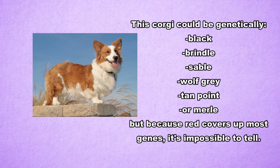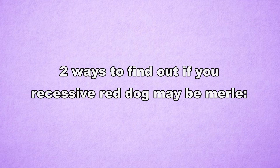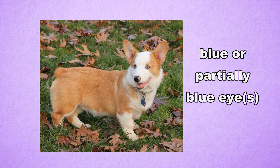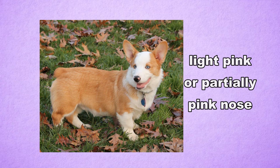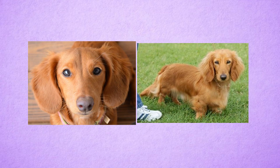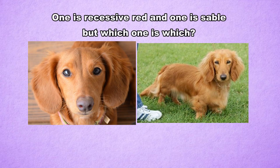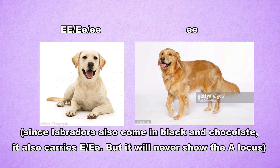A recessive red could even be merle while appearing solid red. Two ways to tell if your recessive red dog has merle is to see if the dog has blue or partially blue eyes, or it has a pink or partially pink nose with spots on it. Recessive red only appears in particular breeds, but many of these breeds can also carry sable which can look red. A clear unmasked sable can look identical to a recessive red. Golden Retrievers and Labradors are two breeds that can only carry recessive red, and there are a number of breeds that carry and express both sable and recessive red, such as the Pomeranian and the Dachshund.